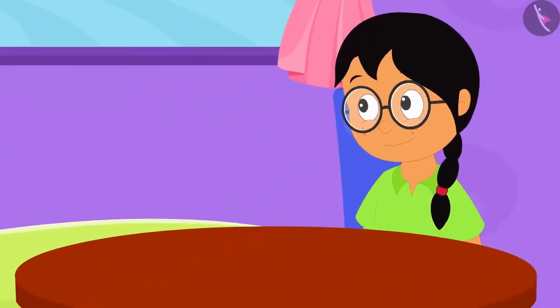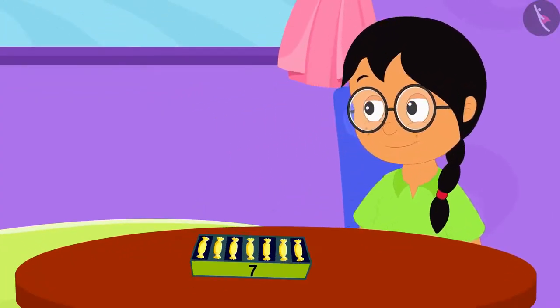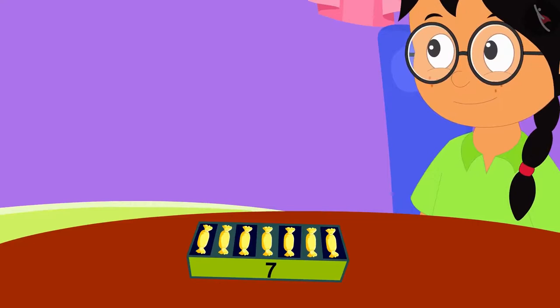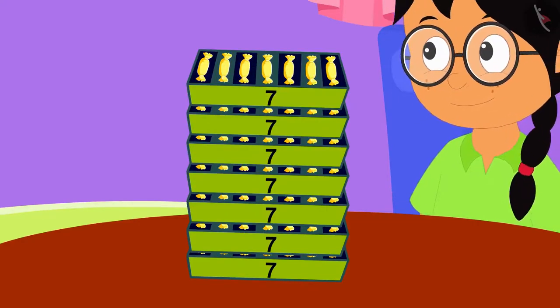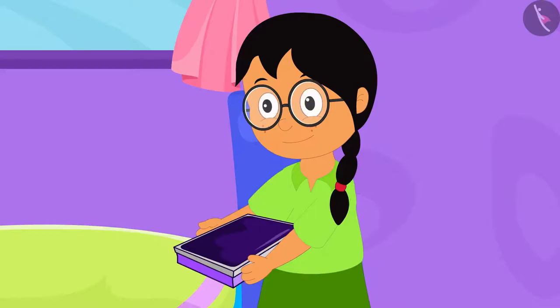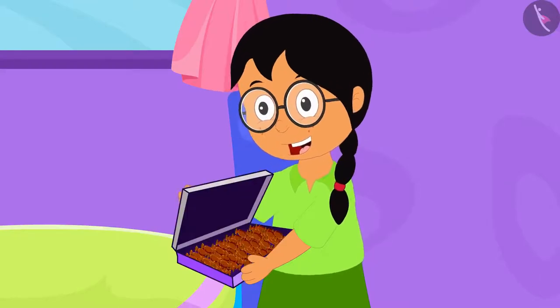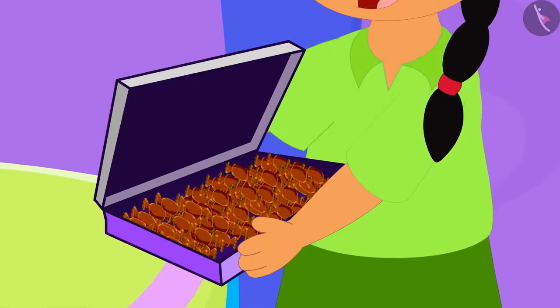Meenu quickly made a group of 7 toffees and filled 49 toffees in 7 boxes. Now, Meenu opened a chocolate toffee packet brought by her uncle.